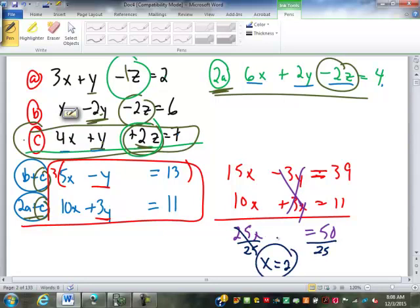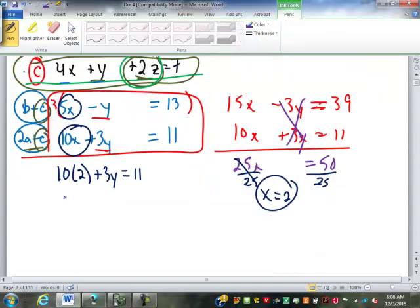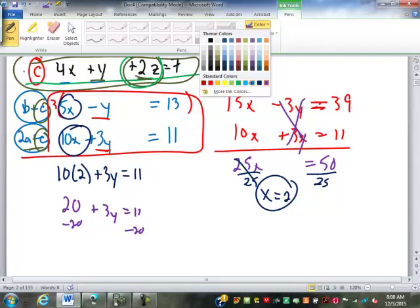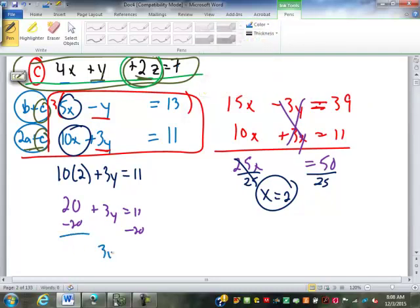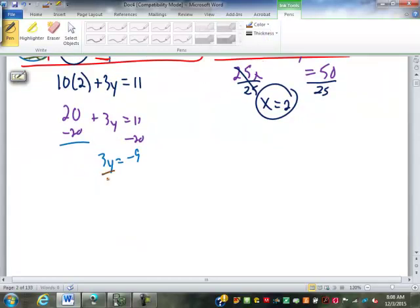Once I know that X equals 2, I can go back. Put in 2 for X. So, either one of these. I'll put it in here. So, 10 times 2 plus 3Y equals 11. 10 times 2 is 20. Plus 3Y equals 11. So, subtract 20. 3Y equals negative 9. And, divide by 3. Y equals negative 3.